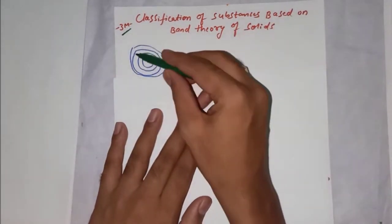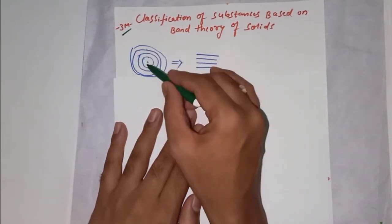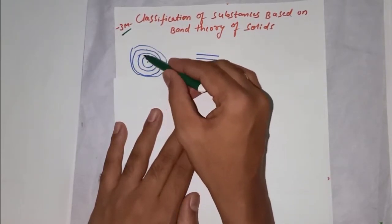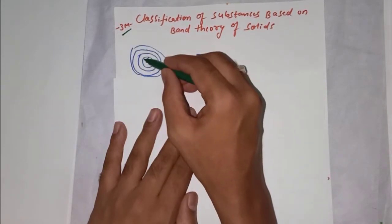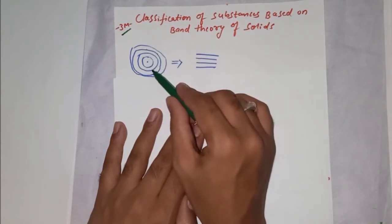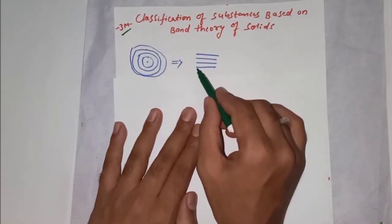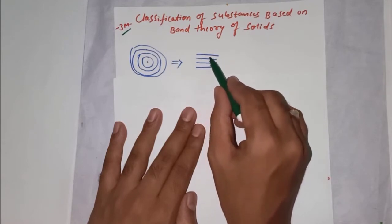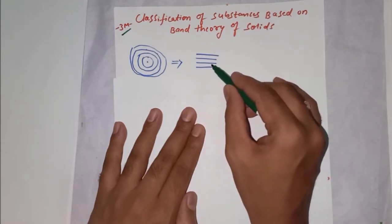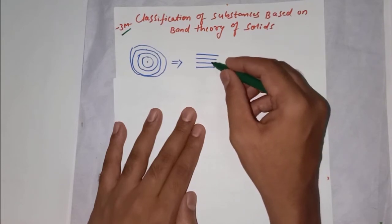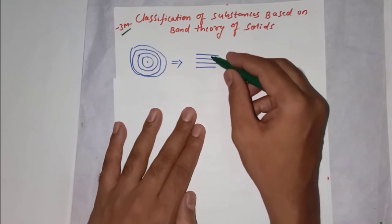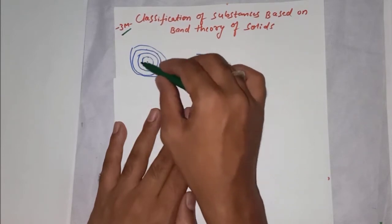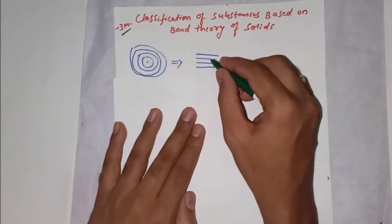Consider an atom consisting of a nucleus and electron orbits. We can represent these orbits in a linear fashion and call them energy levels — first energy level, second energy level, third energy level, and so on. When a single atom is considered, the energy levels are separate.